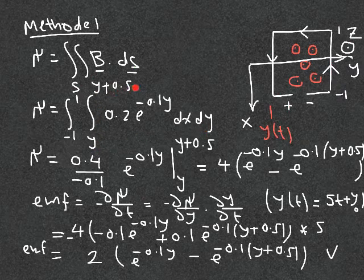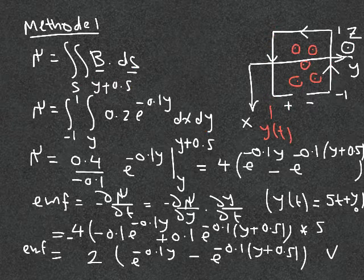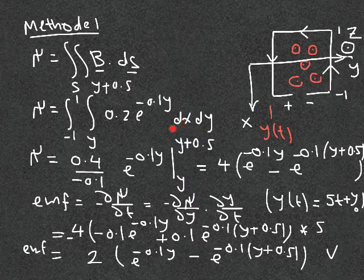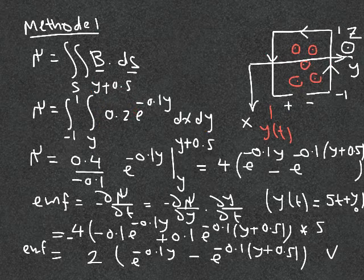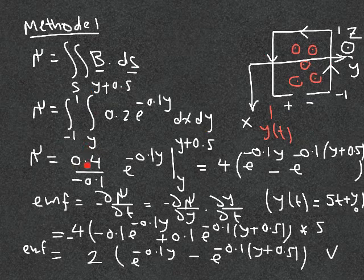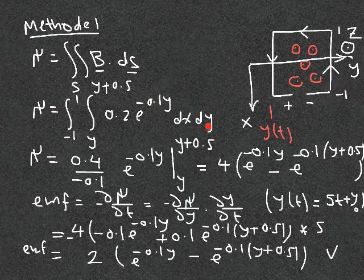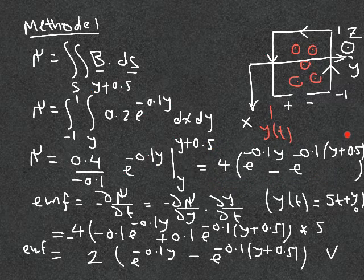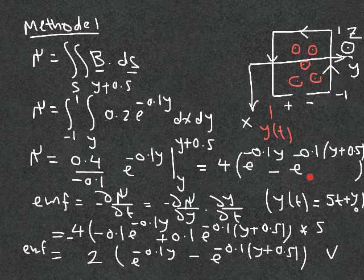The bounds for the flux integral: y ranges from y to y plus 0.5, and x ranges from minus 1 to 1, since the total length is 2. The integral over x gives 2. Multiplying 2 by 0.2 gives 0.4. We then integrate e to the minus 0.1y dy, dividing by minus 0.1 and evaluating at the upper and lower limits. This gives the expression for the flux through the loop, which is always positive.